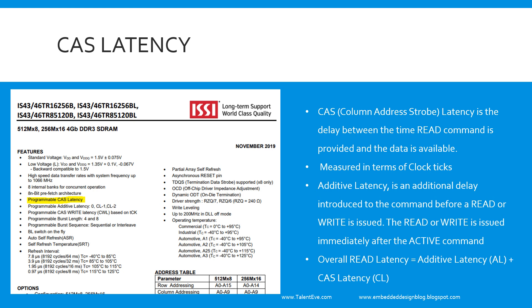When you read data from DDR, you provide a row address and a column address. There will be a latency associated with the column address, which is the column address strobe latency. Before a read, there will also be some additional delay associated with synchronization.